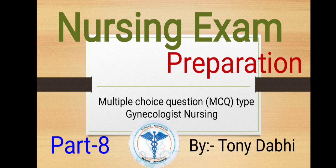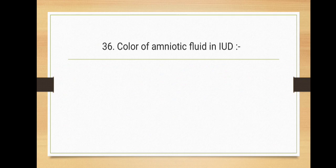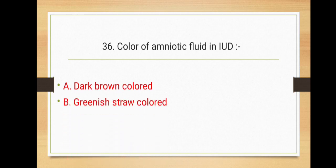Starting from the 36th question: color of amniotic fluid in IUD is - option A dark brown color, option B green straw colored, option C